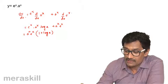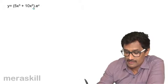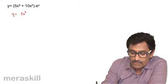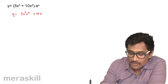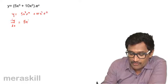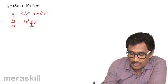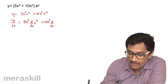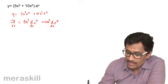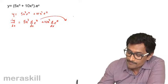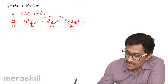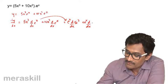Here we are using the product rule. Similarly, for the next example, we can multiply through: y = 5x³·e^x + 10x²·e^x. So dy/dx gives 5x³ · (d/dx of e^x) + e^x · (d/dx of 5x³) + 10x²·(d/dx of e^x) + e^x · (d/dx of 10x²).